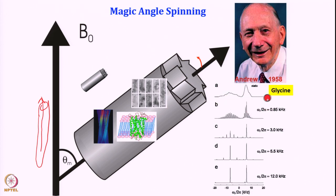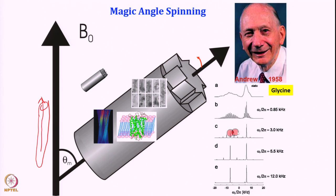Glycine is the simplest biological amino acid you can think of. When we start spinning at say 0.85 kilohertz, the lines start becoming a little sharper and you can see the orientation dependence and chemical shifts start appearing. At 3 kilohertz the lines are slowly getting sharper. At 5.5 kilohertz the two lines have really become sharp. And at 12 kilohertz we see only two beautiful peaks — one at C-alpha and one at CO. So glycine spinning at 12 kilohertz gives us really sharp peaks.